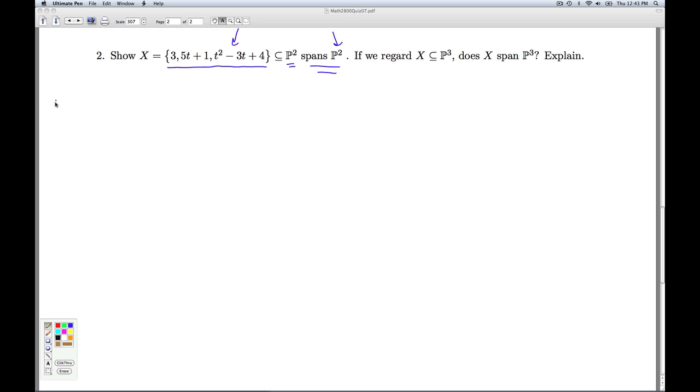So I start off, I let u be some fixed but arbitrary element of P2. Then what does u look like? It looks like some at squared plus bt plus c, where a, b, and c are real numbers.